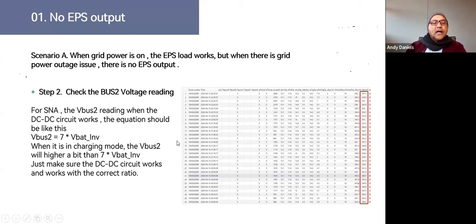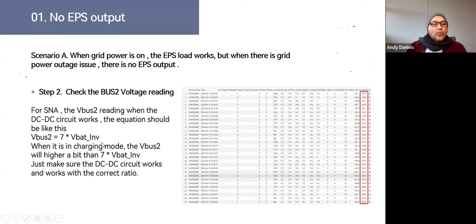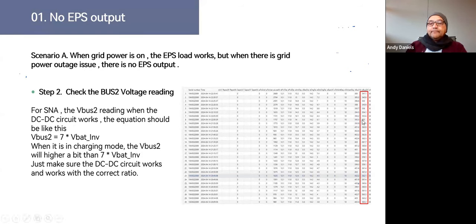If the BUS2 voltage is incorrect, it means the DC-to-DC circuit is not working and the machine will need to come in for repairs. To summarize: on the SNA6 the multiplier is 7 times the nominal battery voltage, and on the SNA5 it is 6 times. If this ratio is not correct, the DC-to-DC circuit is faulty.